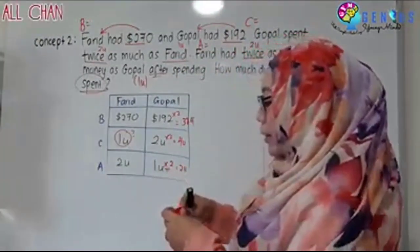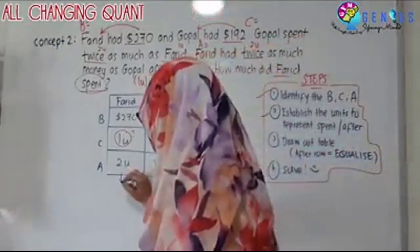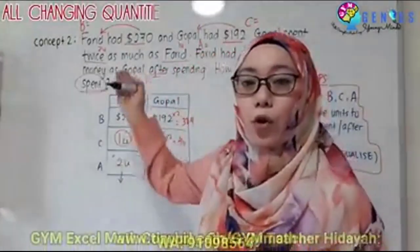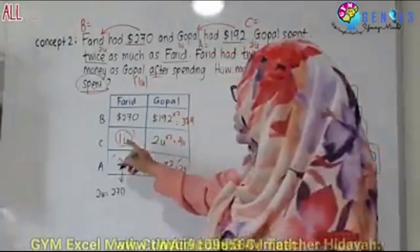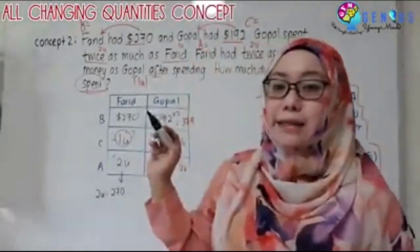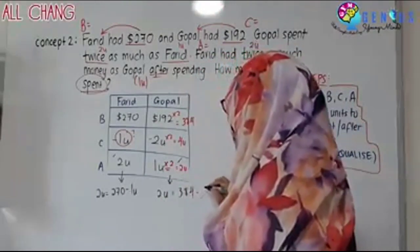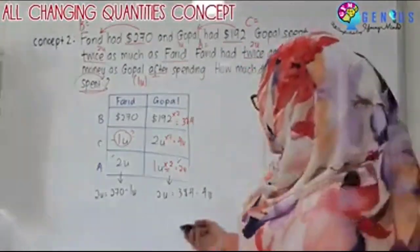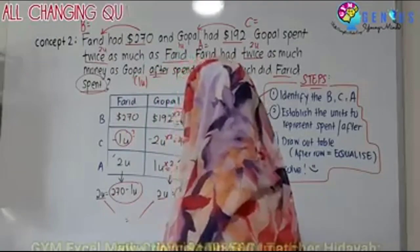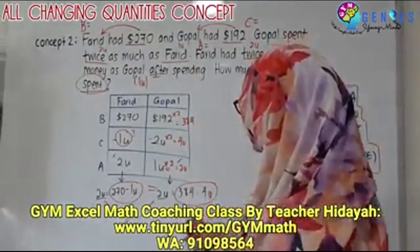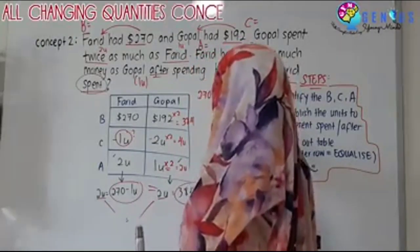We're not done yet. Per column, we look at the equalized row — the after row. To get these two units, what happened for Farid? Two units equals $270 minus one unit. For Gopal, to get the two units, it equals $384 minus four units. Since both equal two units, we rewrite and solve: 270 minus one unit equals 384 minus four units.